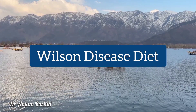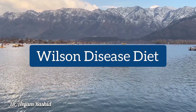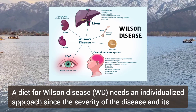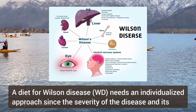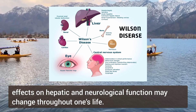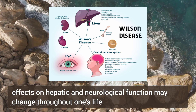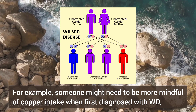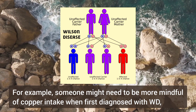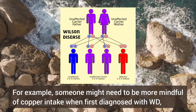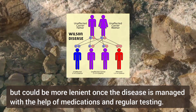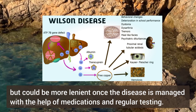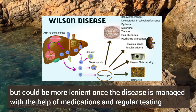Hello everyone, welcome back. This video is about diet for Wilson disease patients. A diet for Wilson disease needs an individualized approach, since the severity of the disease and its effect on hepatic and neurological function may change throughout one's life. For example, someone might need to be more mindful of copper intake when first diagnosed, but could be more lenient once the disease is managed with medications and regular testing with a doctor.